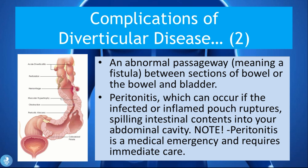Another complication is an abnormal passageway — a fistula — between sections of the bowel and the bladder. As shown in the picture on the left, multiple pouches protrude from the colon wall, and one of them has formed a passageway into the bladder. This is a serious problem because fecal matter from the colon enters the urinary tract, causing significant issues including UTIs, bladder infection, and fecal matter in the urine.